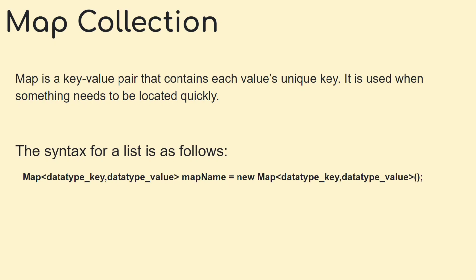Then we have map. A map is a key-value pair where each value has a unique key. It is used when something needs to be located quickly. Every key must be unique — only then can you access the value associated with that particular key.